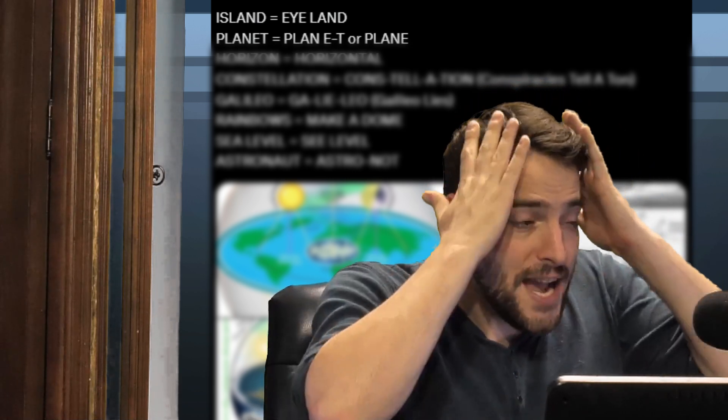Is it supposed to be suggesting you can see across the entire world because it's flat? Is that what's going on? Because you can't see across the entire world. There are experiments that prove that. I genuinely don't know exactly what their argument is, so it's really hard to explain why it's wrong. But island's not eye-land. I think we know this.